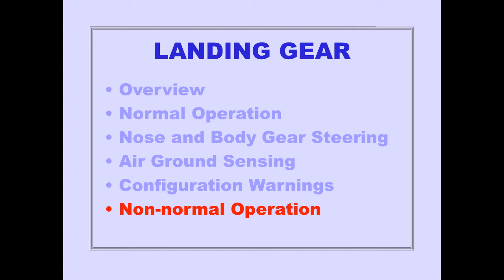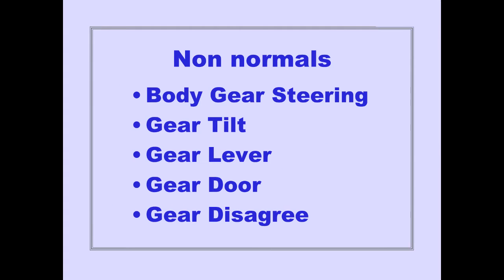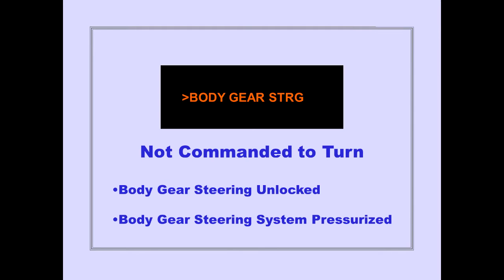Let's now discuss non-normal operation. Non-normals include body gear steering, gear tilt, gear lever, gear door, and gear disagree. On the ground, the ICAS advisory message 'body gear steering' is displayed when the body gear has not been commanded to turn and body gear steering is unlocked, or the body gear steering system is pressurized.